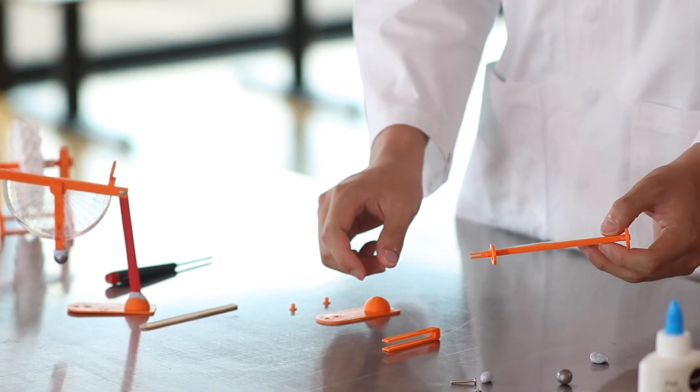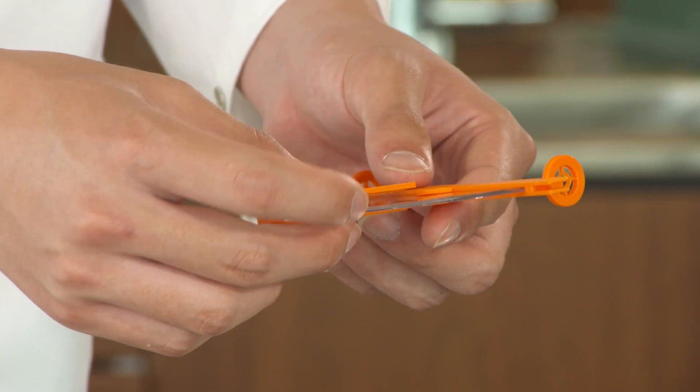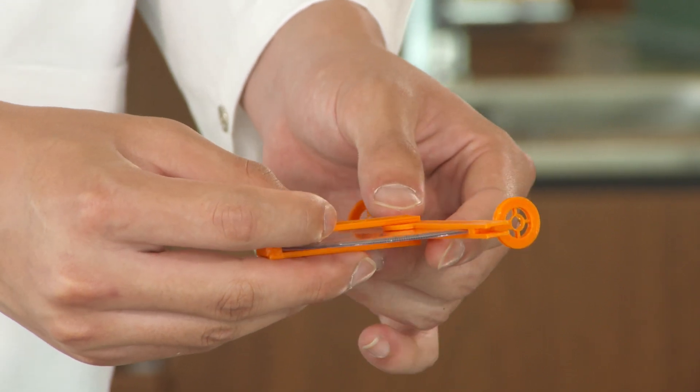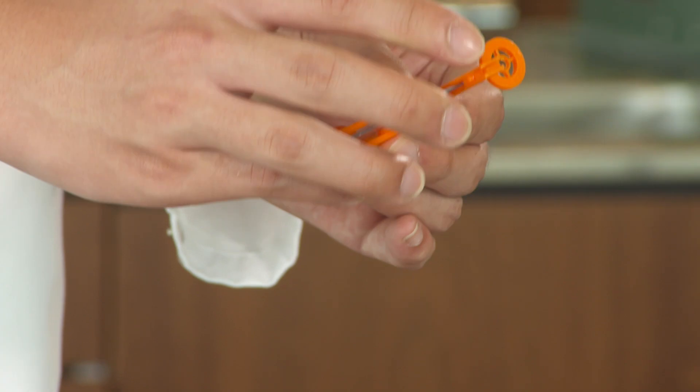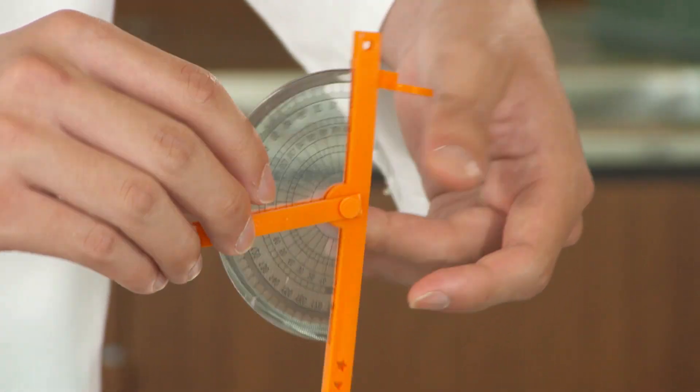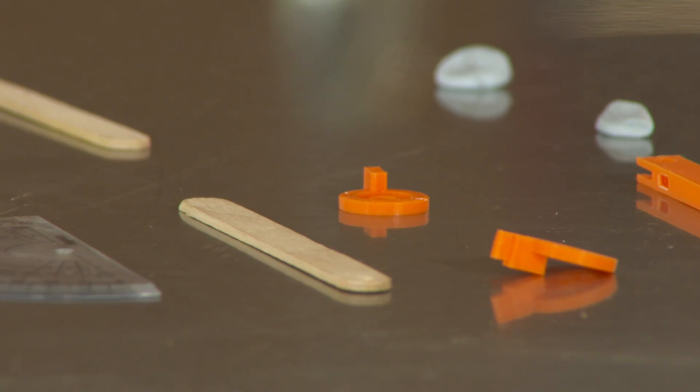The next thing you want to do is to put the angle measure in. So you slot it in like this. Then you take the two little orange pieces and you put them in. Now we're going to leave this there and assemble the next part.